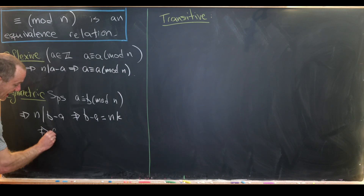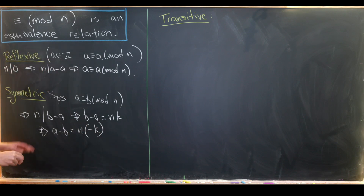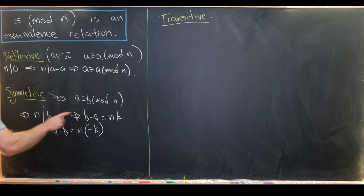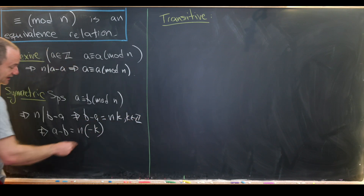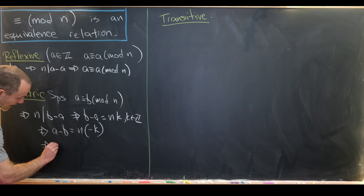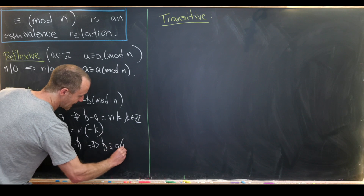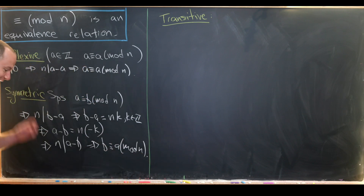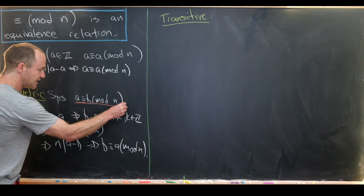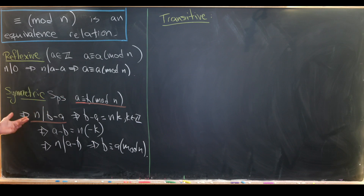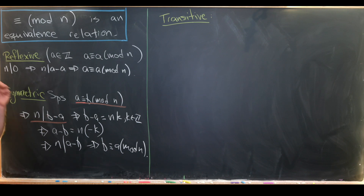That means a minus b is equal to n times negative k — just multiplying both sides by negative one. Since k is an integer, negative k is also an integer, meaning n divides a minus b, which is exactly the condition for b to be congruent to a mod n. Note that whether you start with n divides b minus a or n divides a minus b varies by textbook, since congruence is symmetric.